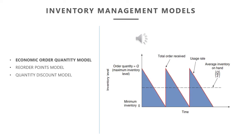Under this model, if we accept the six assumptions, we can represent inventory behavior with the triangular chart. Each triangle represents a cycle: we start with order quantity Q, inventory declines uniformly at a constant rate due to constant demand, and then a new cycle begins as soon as we order. Because received inventory is instantaneous, our inventory jumps immediately from zero back to Q with no lag or waiting time.